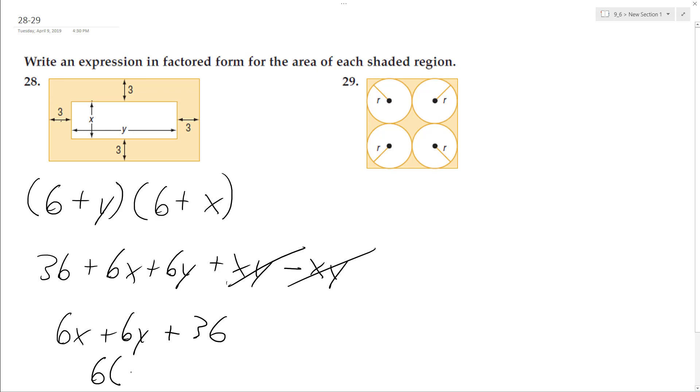We can factor out a 6, so we end up with 6 times the quantity x plus y plus 6. And that's the area for the shaded region of the square right here.